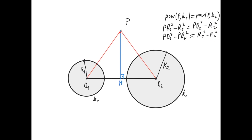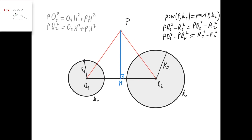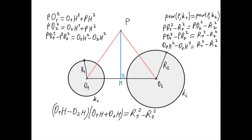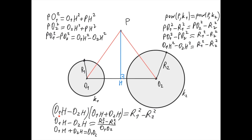Construct an altitude PH in the triangle formed by P, O1, and O2. Applying the Pythagorean theorem to each sub-triangle: PO1 squared equals O1H squared plus PH squared, and PO2 squared equals O2H squared plus PH squared. Subtracting these, PH cancels, leaving PO1 squared minus PO2 squared equals O1H squared minus O2H squared. Substituting into our equation, and factoring as (O1H minus O2H)(O1H plus O2H), where O1H plus O2H equals O1O2, we divide both sides by O1O2 to find O1H minus O2H equals (R1 squared minus R2 squared) divided by O1O2.